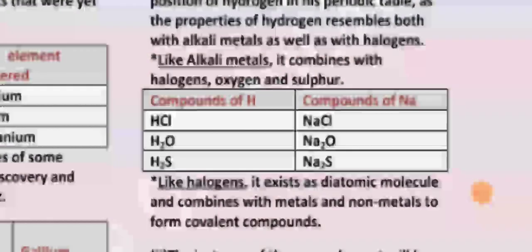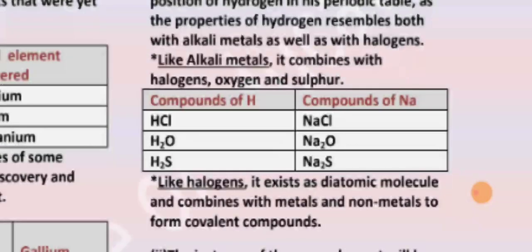Like HCl, H2O, H2S for hydrogen, and NaCl, Na2O, Na2S for alkali metals - the same response. Like halogens, hydrogen exists as diatomic molecules and combines with metals and non-metals to form covalent compounds.